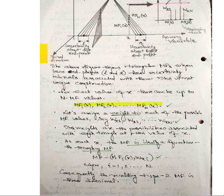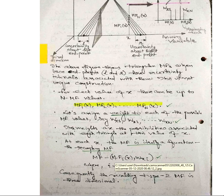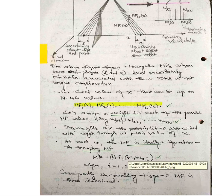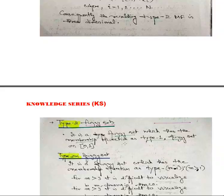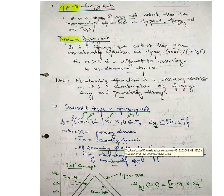If you are taking a single membership function as MF and its variation is being determined with respect to weight, then you can get the representation of the Type 2 membership function. Consequently, the resulting Type 2 membership function is three-dimensional. That is what we define in terms of this particular representation. Now let's see the slides.